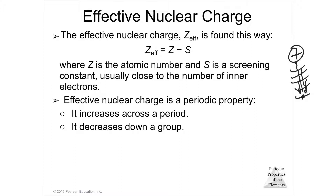The more shells you get away from the nucleus, the more the distance decreases — it decreases down a group. So the effective nuclear charge: you might have, say, 11 electrons and 11 protons that should attract each other, but the outermost electrons are easier to steal because they're farther from the nucleus and the inner ones are actually repelling them outward.